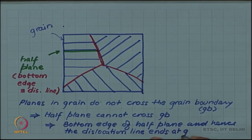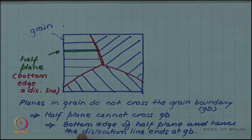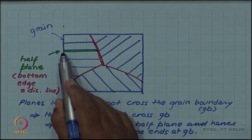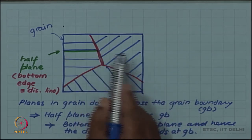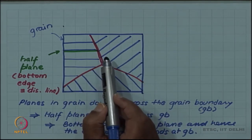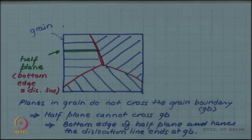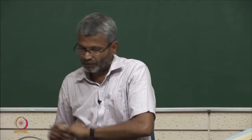A dislocation line ends at the grain boundary. So a dislocation line can end on a free surface, or internally it can end on a grain boundary, which is also a surface but is an internal surface. We will continue examining the properties of dislocations ending at various places in the next video.